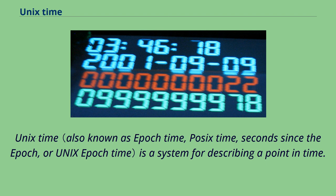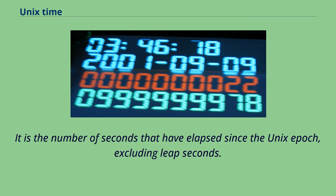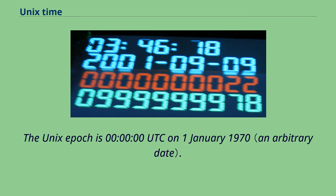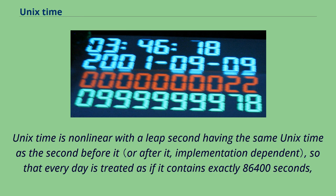Unix time is a system for describing a point in time. It is the number of seconds that have elapsed since the Unix epoch, excluding leap seconds. The Unix epoch is 00:00:00 UTC on January 1, 1970. Unix time is non-linear, with a leap second having the same Unix time as the second before it.